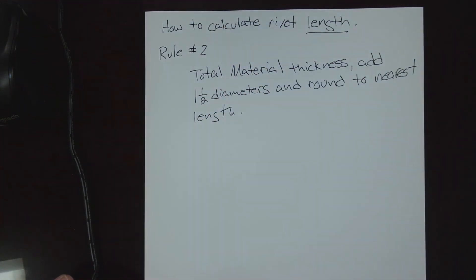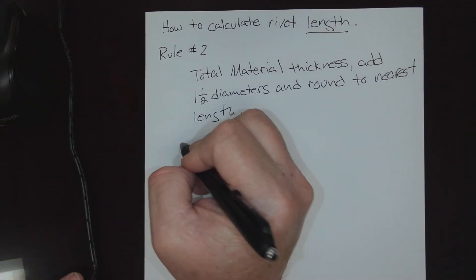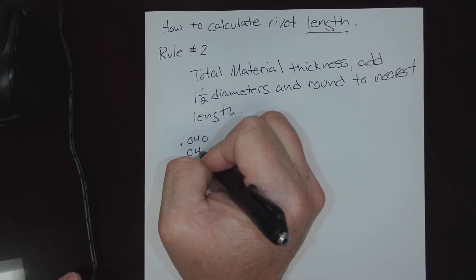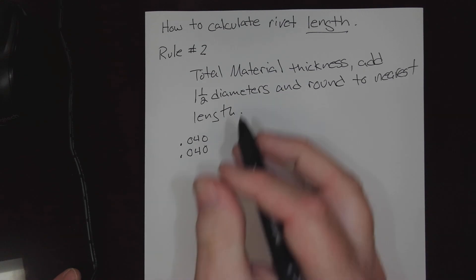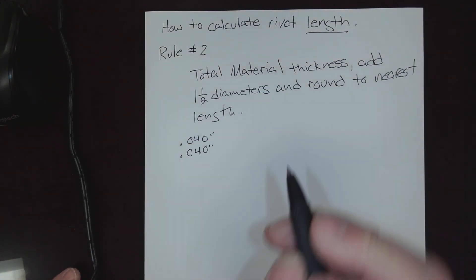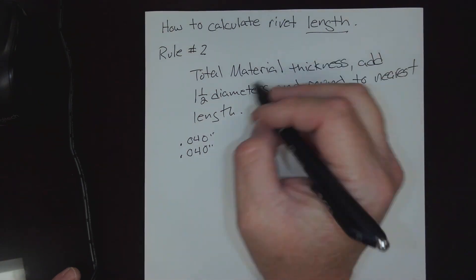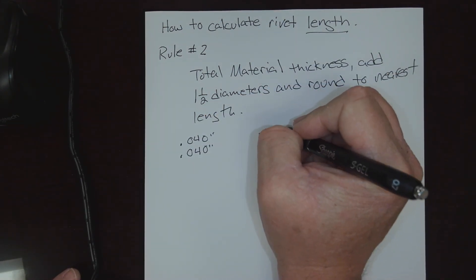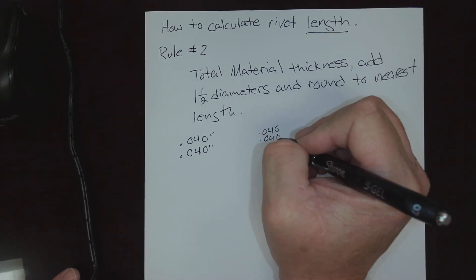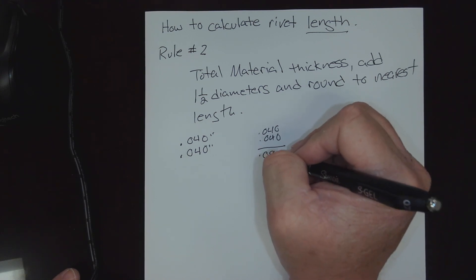We're going to have to look up or down in order to solve this problem. We're going to practice one together. Let's say our total stack up - once again we'll start with our practice from the first rule - we're going to take two sheets of 40 thousandths of an inch material. So the first part of the rule says we're going to take total stack up.